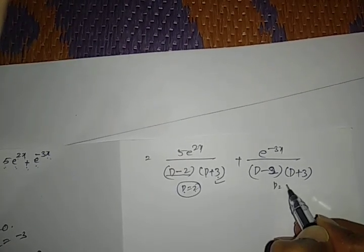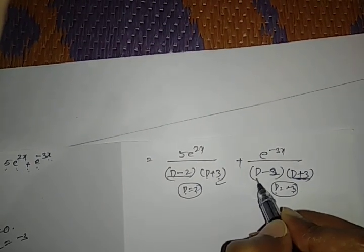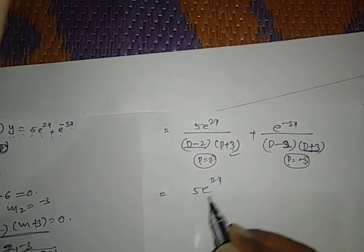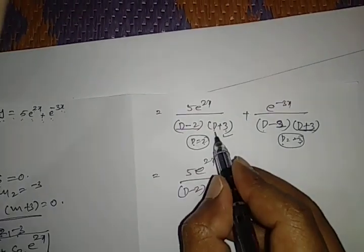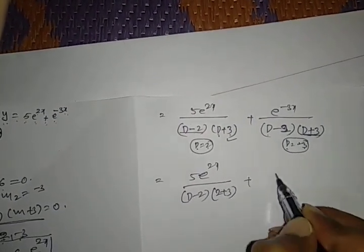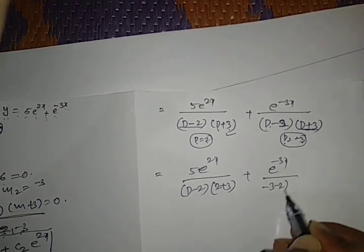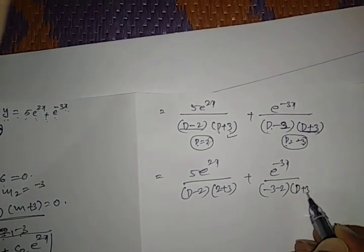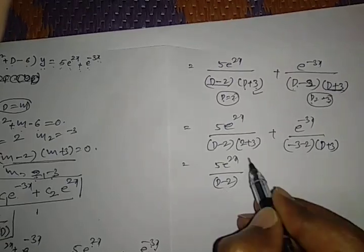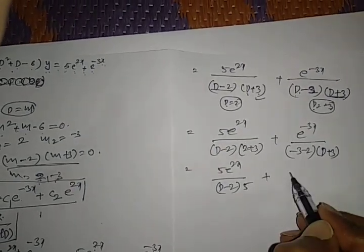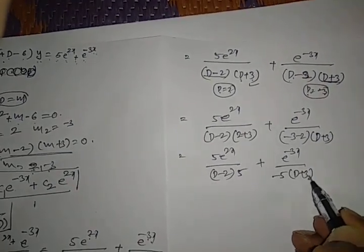For the first term, substitute D = 2 in (D + 3): that gives 5, so we get 5e^(2x) / [5(D - 2)]. For the second term, substitute D = -3 in (D - 2): that gives -5, so we get e^(-3x) / [-5(D + 3)]. The 5's cancel, leaving e^(2x) / (D - 2) and -1/5 · e^(-3x) / (D + 3).